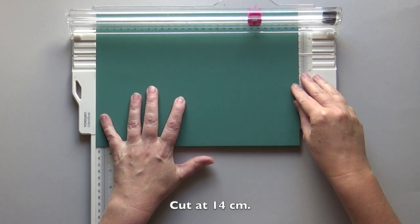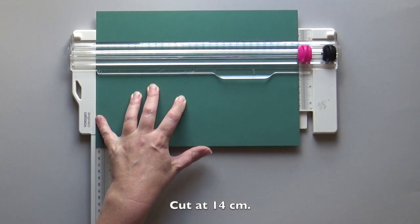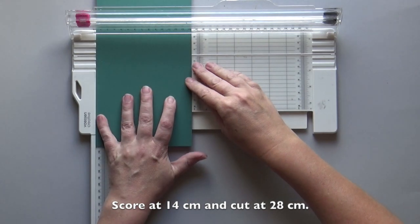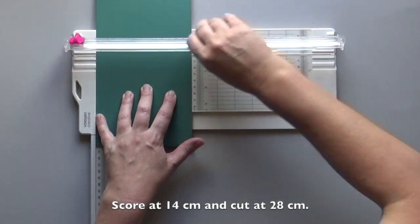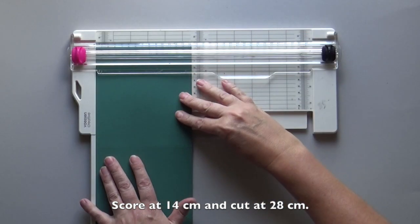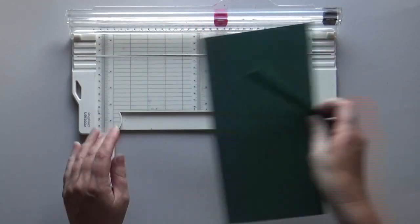Cut a piece of card stock with a height of 14 cm. Score at 14 cm and cut at 28 cm. This will be the base card.